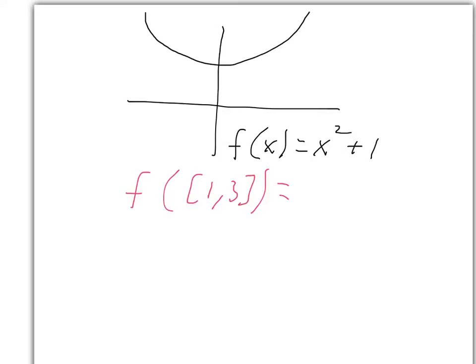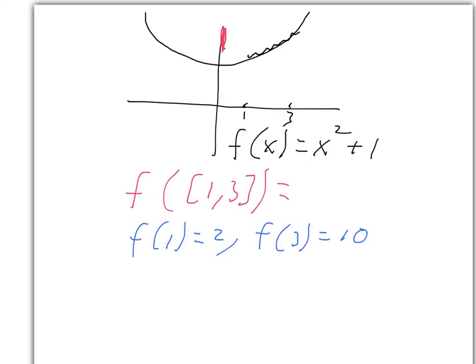If you look at the graph, 1 is here, 3 is here. Looking at the values on the graph from 1 to 3, that gives you all of these points on the graph, and the corresponding y values go from here up to here. The lowest corresponds to f of 1 and the highest to f of 3, because the function is increasing. Now, f of 1 is equal to 2, and f of 3 is equal to 10. So we get everything in between, and therefore the image is the closed interval from 2 to 10.